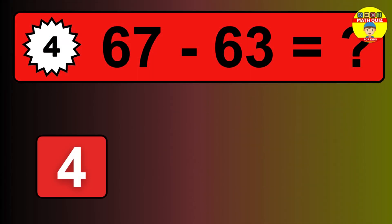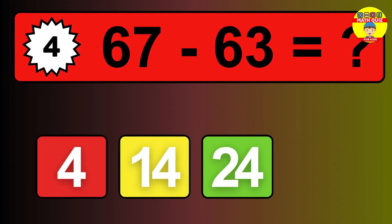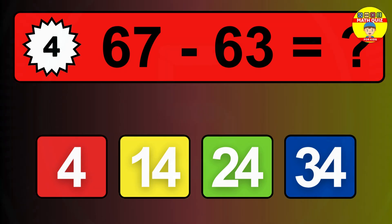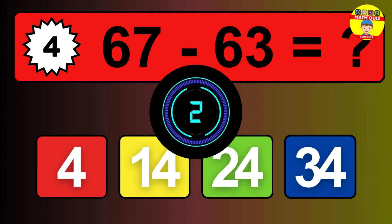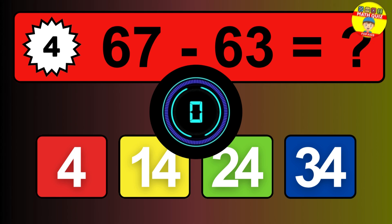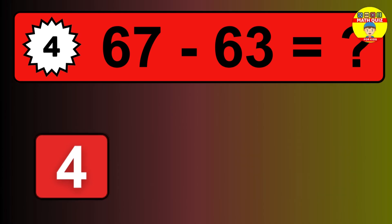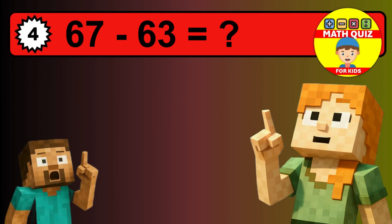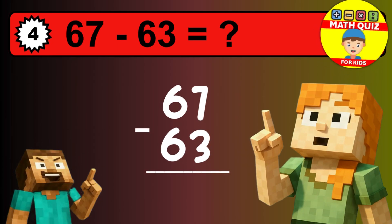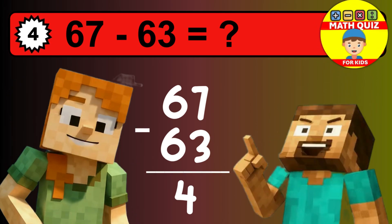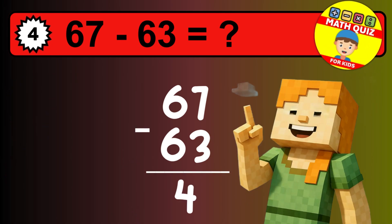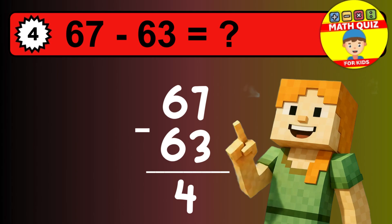What is 67 minus 63? Time to think. Let's solve this step by step. We start with the units: 7 minus 3 is 4. Then we go to the tens: 6 minus 6 is 0. The final answer is 4.